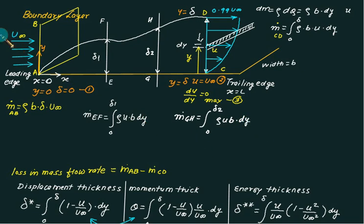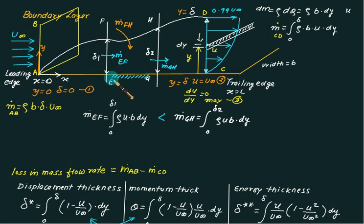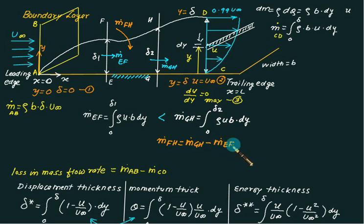Since delta-2 is greater than delta-1, m-dot GH is more than m-dot EF. Applying the law of conservation of mass between sections EF and GH: no mass enters from EG because it is a solid plate. The mass leaving through GH is more than the mass entering through EF, so some mass must enter from the FH side. Therefore, the mass entering from FH equals m-dot GH minus m-dot EF.